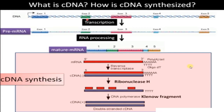Now what is cDNA? cDNA is a complementary DNA. Usually, DNA produces a pre-mRNA through transcription. After RNA processing takes place, introns are removed and only exons remain — this is called mature mRNA. We isolate this mature mRNA and, with the help of a reverse transcriptase enzyme and PCR, we can synthesize the complementary DNA. After synthesis, a ribonuclease H enzyme is added to cleave the mRNA. Then, using this complementary DNA, with the help of DNA polymerase and Klenow fragment, we can synthesize double-stranded cDNA.